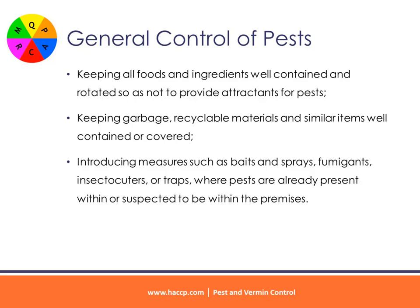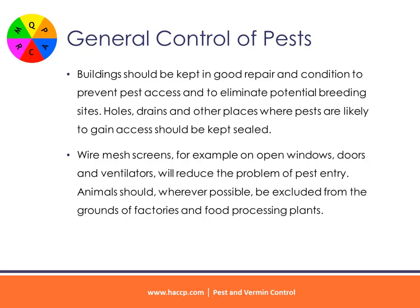Introducing measures such as baits and sprays, fumigants, insectocutors or traps where pests are already present within or suspected to be within the premises. Buildings should be kept in good repair and condition to prevent pest access and to eliminate potential breeding sites. Holes, drains and other places where pests are likely to gain access should be kept sealed.